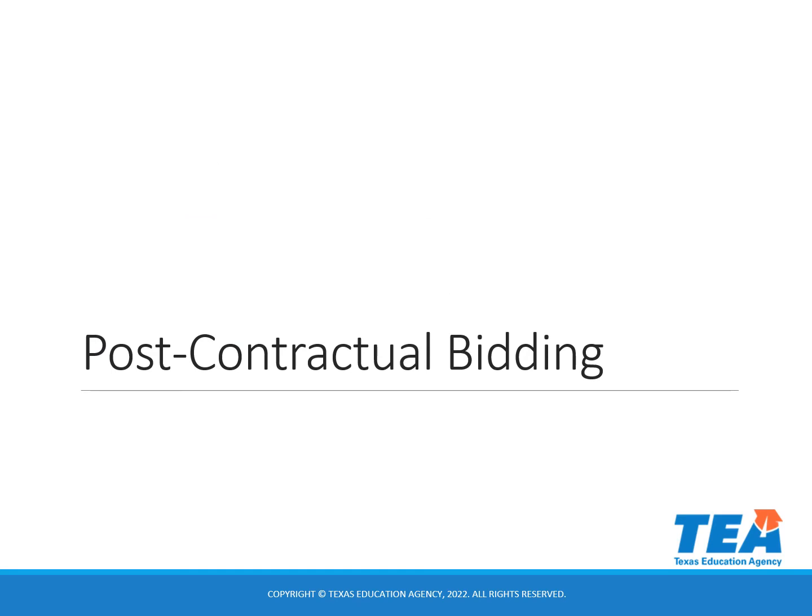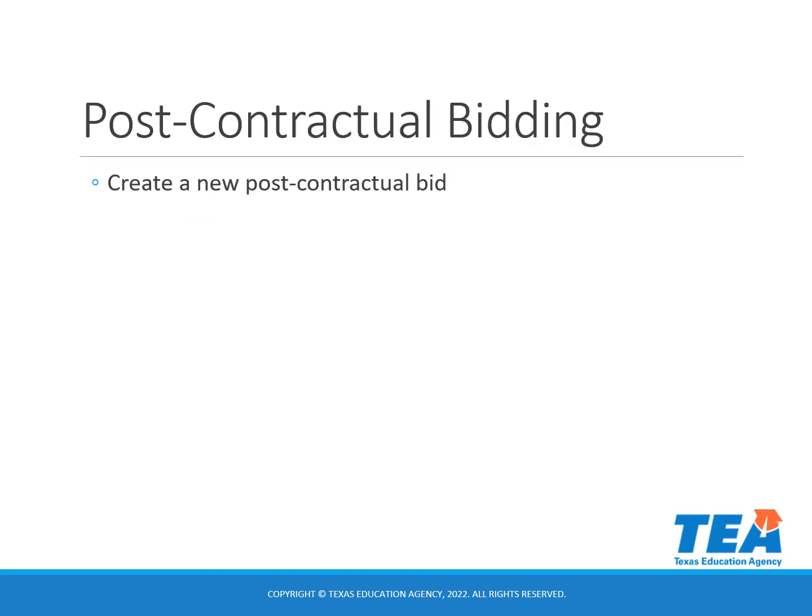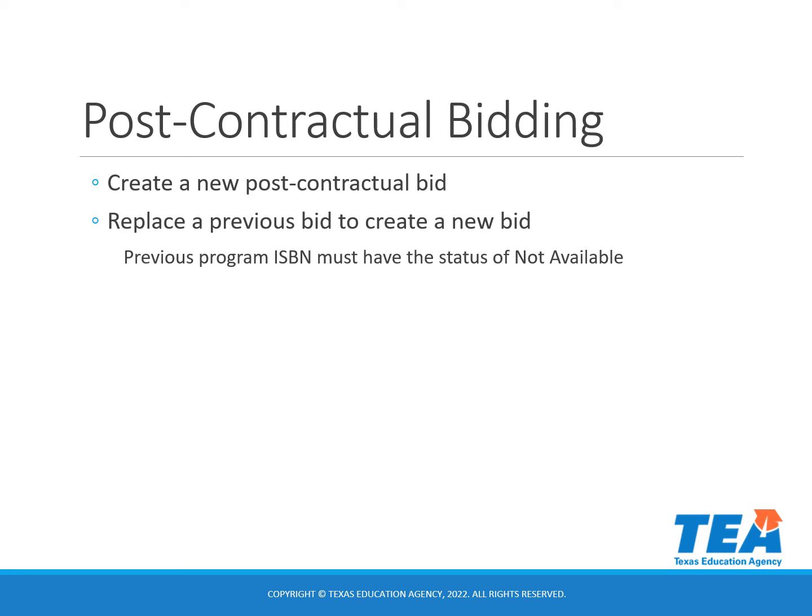Now we will talk about post-contractual bidding in EMAT. The post-contractual bidding link can be used to create a new post-contractual bid, or it can be used to replace a previous bid to create a new bid. The previous program ISBN must have the status of not available. For example, if you had an eight-year bid and now would like to enter a seven-year bid, you would change the status of the eight-year bid to not available, then pre-populate that eight-year bid information and update it to create your seven-year bid.